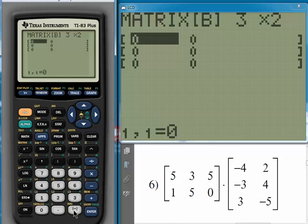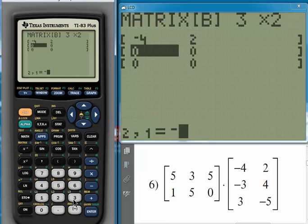So, enter the numbers negative four, and be sure to use the negative key instead of the subtraction key. That'll get you a problem if you put the subtraction key. Two. Negative three. Four. Three, and last one is negative five. Okay.